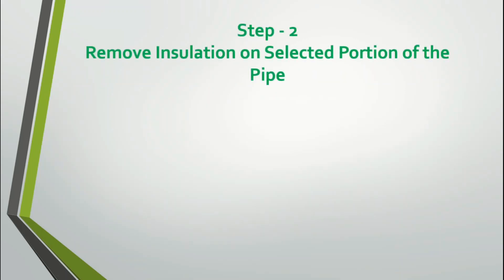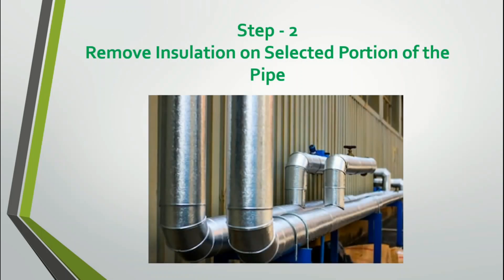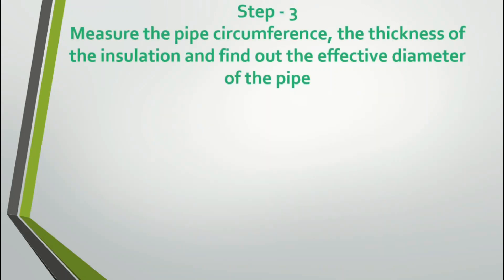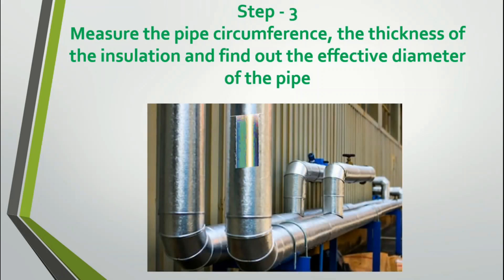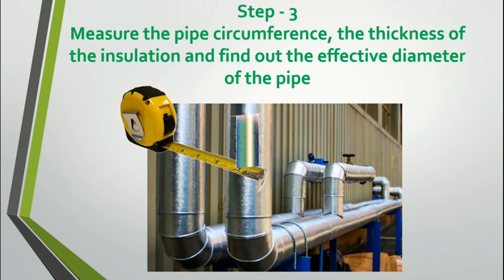Step 2: Remove the insulation on the selected portion of the pipe. The removed insulation part is depicted here. Step 3: Measure the pipe circumference and the thickness of the insulation, and find out the effective diameter of the pipe. With the help of a normal measuring tape, measure the complete circumference of the chilled water pipeline and then measure the thickness of the insulation.